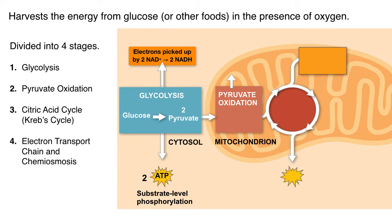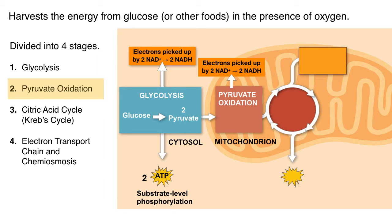Let's move on to the next stage of cellular respiration: pyruvate oxidation. During this stage, the two pyruvate molecules from glycolysis will enter the mitochondria, where the molecule will once again lose high-energy electrons that are picked up by NAD+.